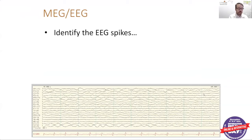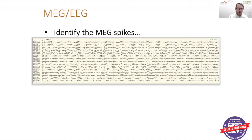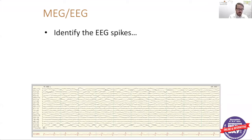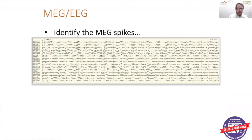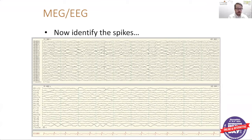Here is an example of how we read MEG. On our screen, this is the EEG section where we look for spikes. Here's an example of the MEG portion of our screen, where we're also looking for spikes. The spikes are not quite as clear on the EEG; however, on the MEG you can pick up a pretty clear spike. When you put the two together, they are time-locked — looking at the same time point — with all EEG channels and a section of the MEG sensors, which we can change to get different views.